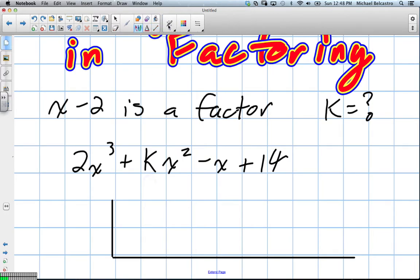If x minus 2 is a factor, what's the value we use in our synthetic division? What number would be over here? 2, that's right. We set it equal to 0, x is equal to 2. So 2 is our number. And we write our coefficients in, which are 2, k, negative 1, and 14.